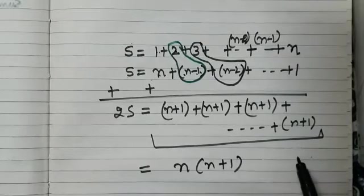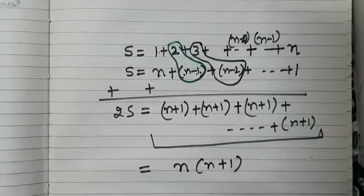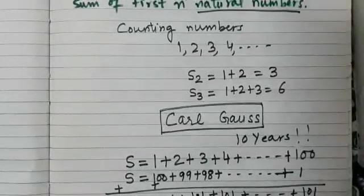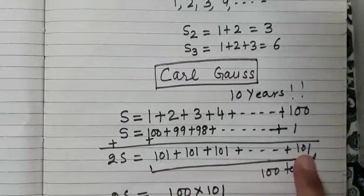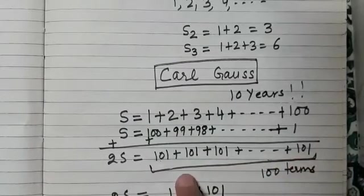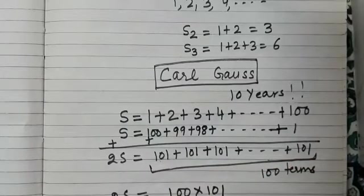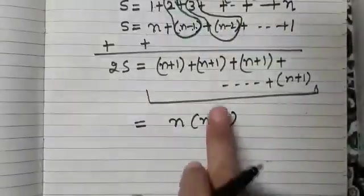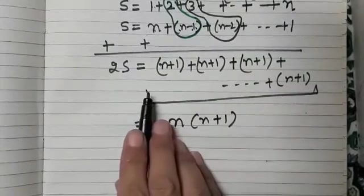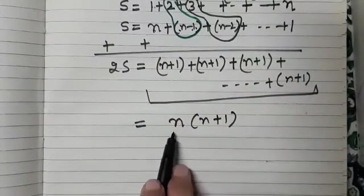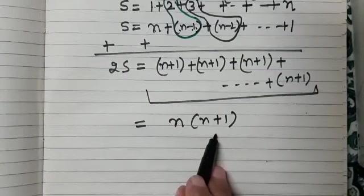How do we get this? Like in the previous question, if you see, here it was 101 to be added 100 number of times. So that gives us 100 into 101. And here, n plus 1 has to be added n number of times. So that gives the sum n into n plus 1.